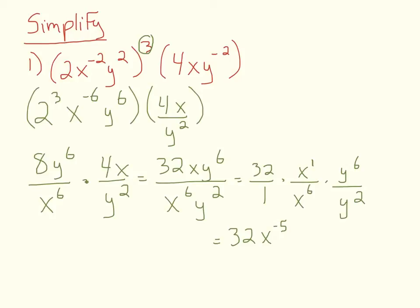So we have one more step to combine like variables. We split them up: 32, times x over x to the 6th, times y to the 6th over y squared. The x over x to the 6th becomes x raised to the negative 5, and y to the 6th over y squared becomes y to the 4th, since 6 minus 2 is 4. This answer isn't finalized because we still have a negative exponent. So the final answer is 32y to the 4th over x to the 5th.